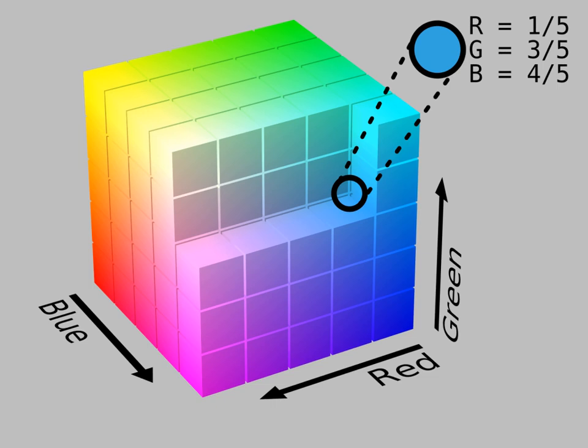The gamut of the display will depend on the three colors used for the red, green, and blue lights. A wide gamut display will have very saturated, pure, light colors, and thus be able to display very saturated, deep colors.